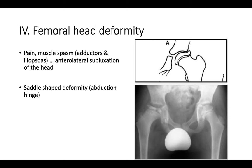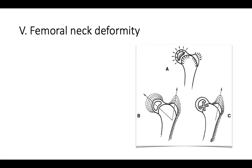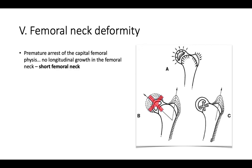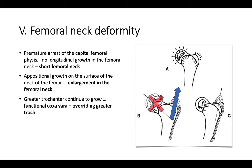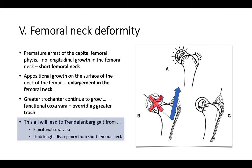Stage four is femoral head deformity. As pain starts, there will be muscle spasm — particularly in the adductors and iliopsoas — causing an abduction-flexion deformity and anterolateral subluxation of the femoral head. The structurally weak lateral edge of the femoral head is compressed by the lateral edge of the acetabulum, causing a saddle-shaped femoral head deformity and the development of an abduction hinge. Additionally, premature arrest of the capital femoral physis stops longitudinal growth of the femoral neck, resulting in a short femoral neck, while appositional growth continues causing widening. The greater trochanter growth continues, resulting in functional coxa vara, an overriding greater trochanter, a Trendelenburg gait, and limb length discrepancy.